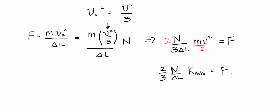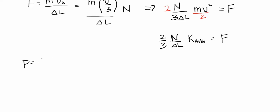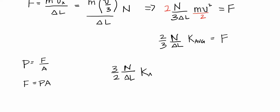Pressure is related to force — pressure is force per area, so force equals pressure times area. Making that substitution: (2/3) · (N/ΔL) · K_avg = P·A, where A is the cross-sectional area of the container.